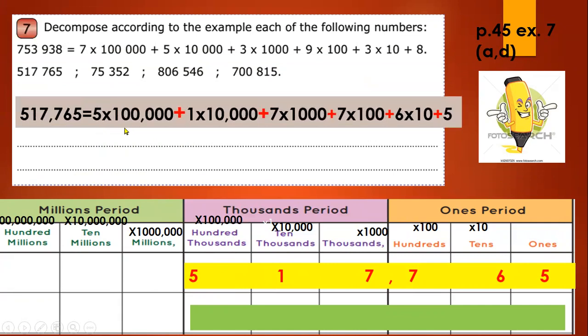This is 5 times 100,000, plus, now 1 is the 10,000, so 1 times 10,000, plus 7,000, it means 7 times 1,000, look at this, plus 700, so 7 times 100, plus 6 times 10, plus 5.